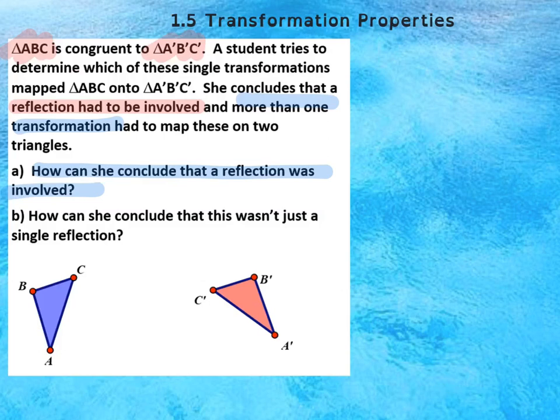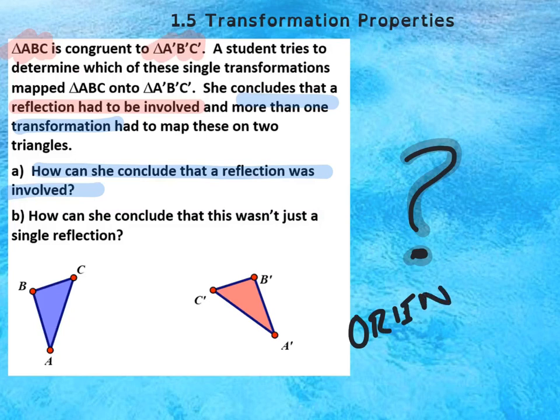Doesn't look like a reflection, but she claims that one was involved. Take a close look. She knows a reflection happened, and why? Because the orientation is different, isn't it? They're reversed. So that's how she knows that there was a reflection involved.